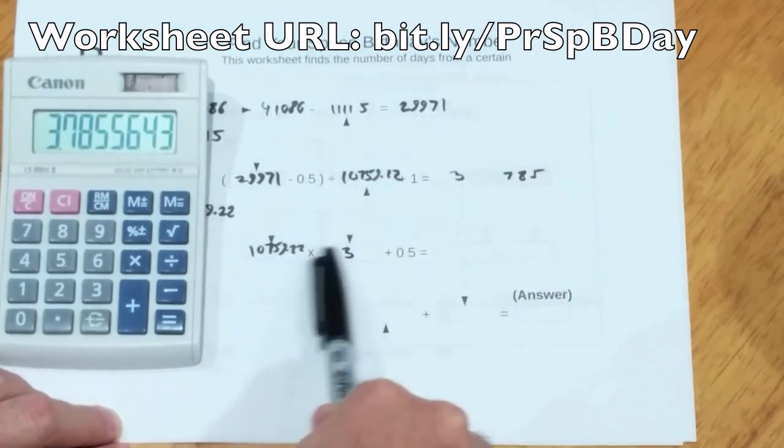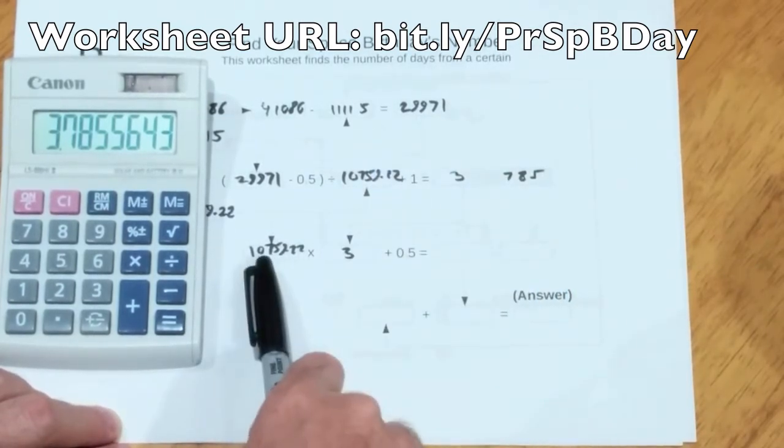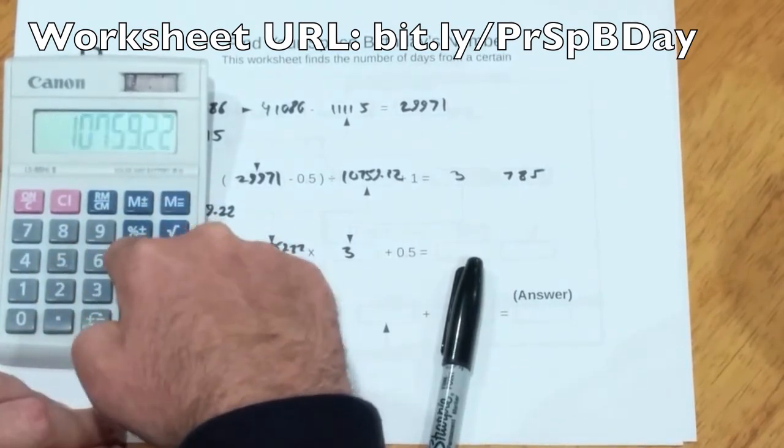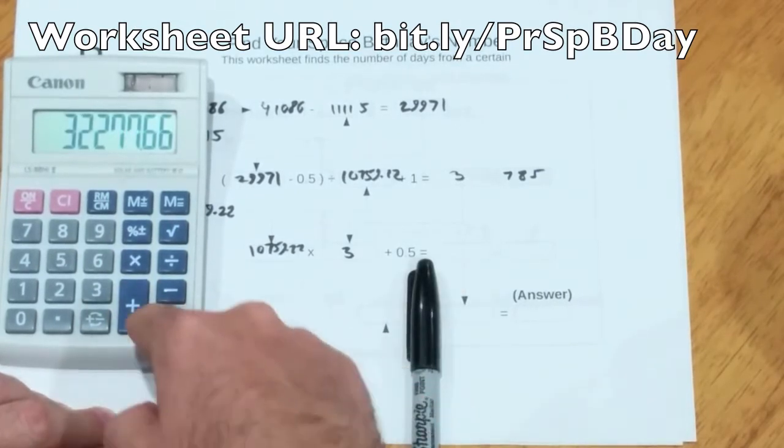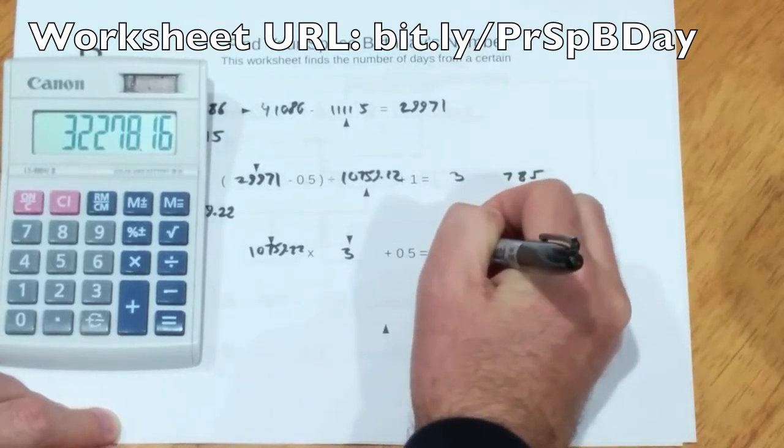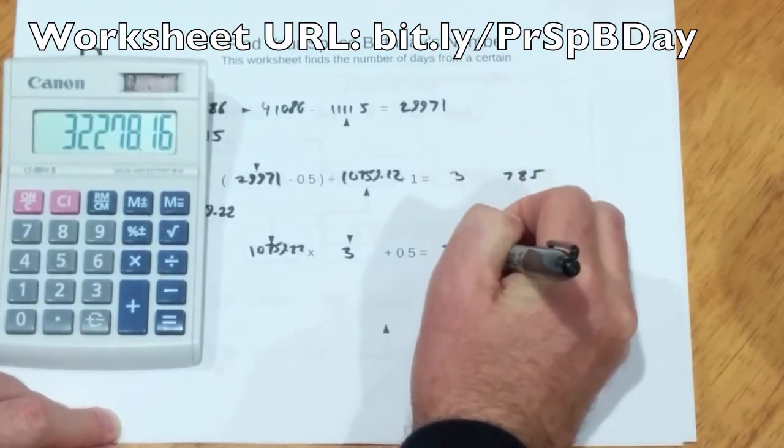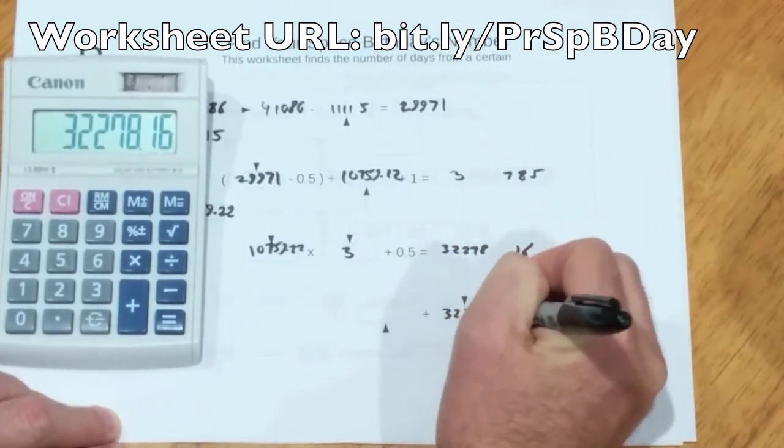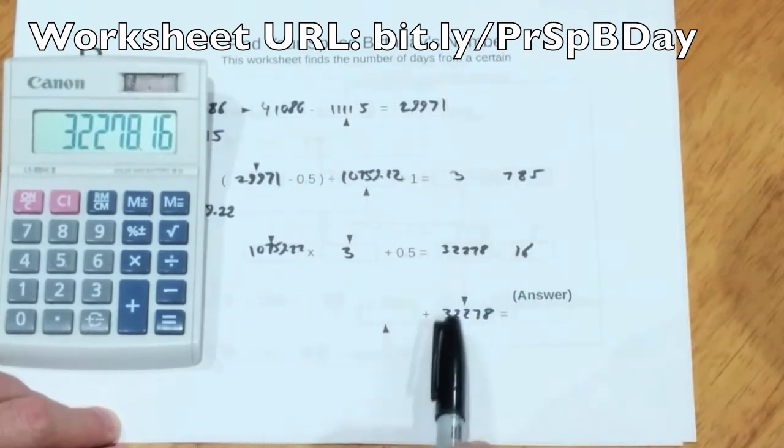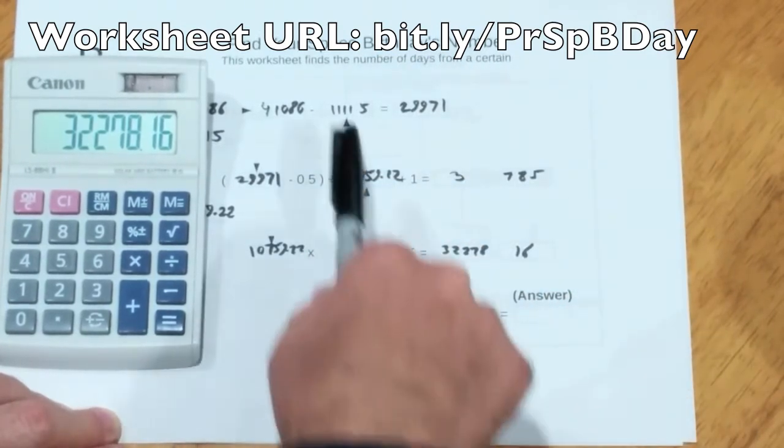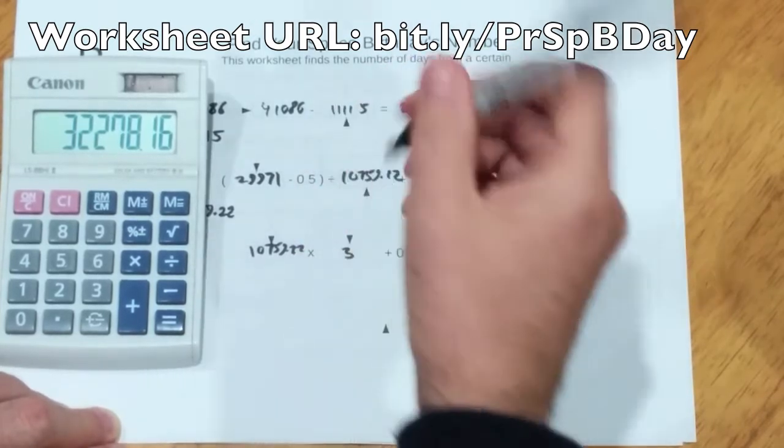How many days is 3 Saturn years? Well, we'll multiply this 10759.22 times 3, add a half. That's just so the rounding comes out correct. 32278. That's how many days.